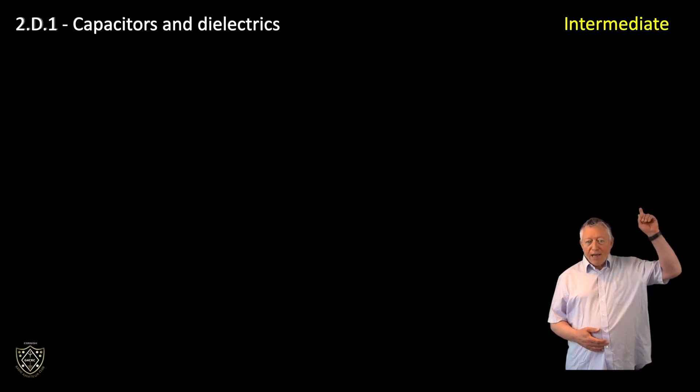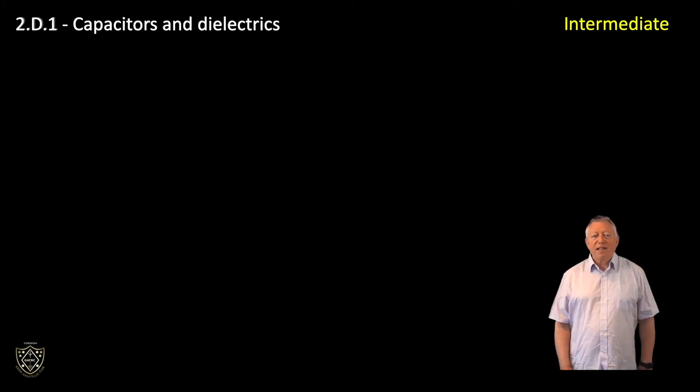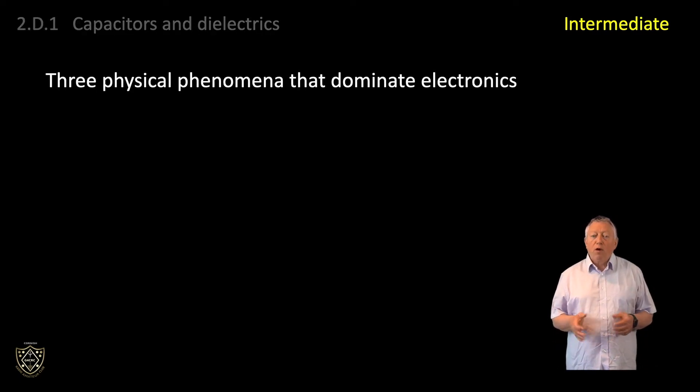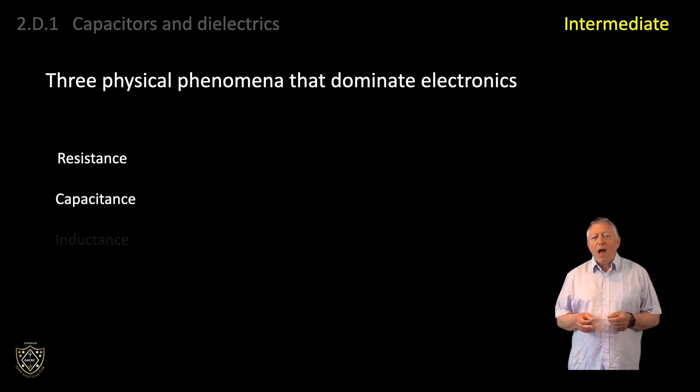Starting at intermediate license level, there are three physical phenomena that dominate electronics: resistance, capacitance, and inductance. We looked at resistance for foundation level, and so now at intermediate level, we'll turn our attention to capacitance.